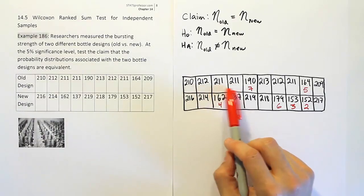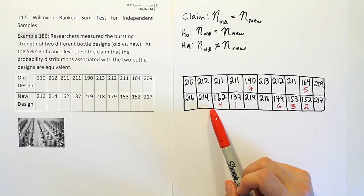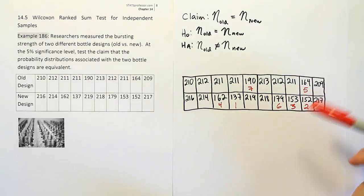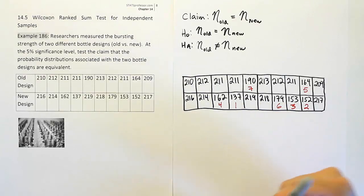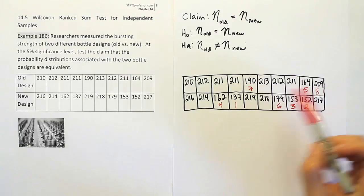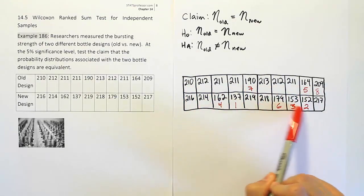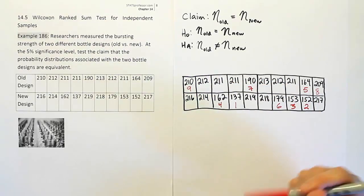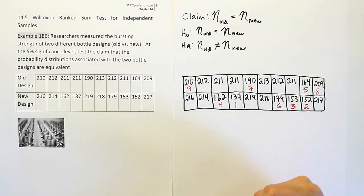There's nothing else in the 190s. Moving into the 200s, there's a 209, which gets rank 8. Then 210 gets rank 9. Now there are several 211s — one here, one here, one here. So I'm going to provisionally assign them ranks 10, 11, and 12, but I'll circle those ranks as a reminder that these are ties and will need to be corrected later.